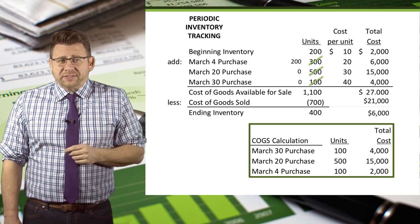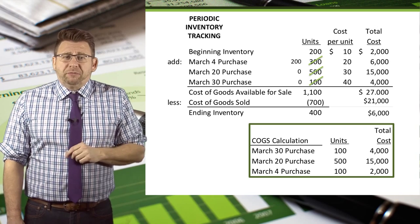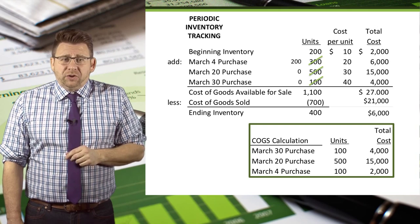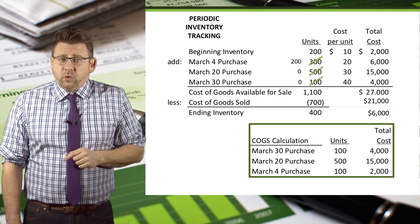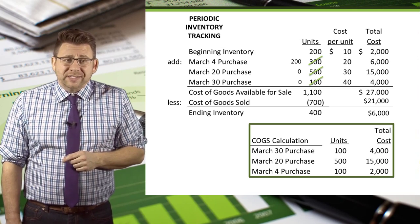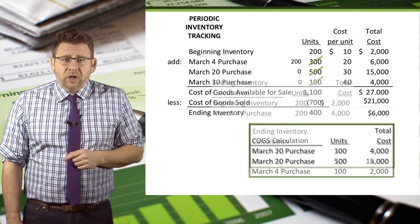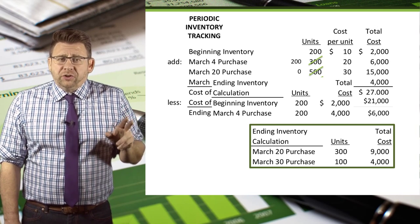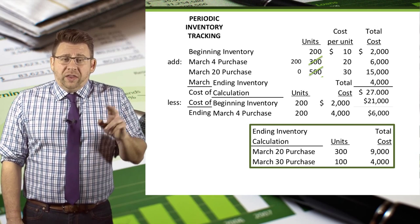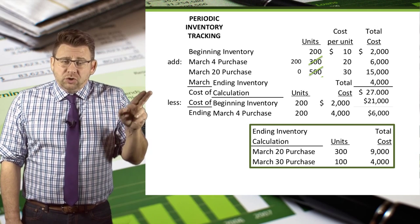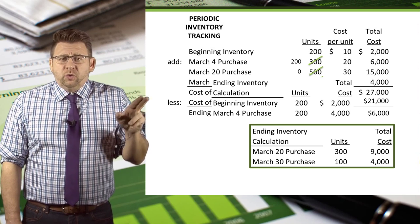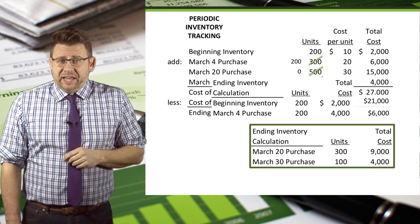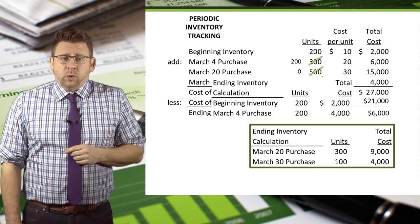Let's plug that into the cost of goods sold model. Since goods available for sale is $27,000, we subtract cost of goods sold of $21,000 to determine ending inventory is $6,000. We can verify this: the 400 units remaining in ending inventory come from 200 units of beginning inventory and 200 units from the March 4 purchase, giving us a total of $6,000, which matches what we calculated.